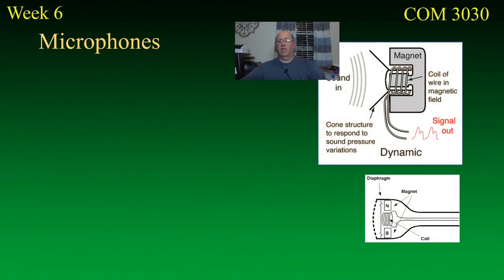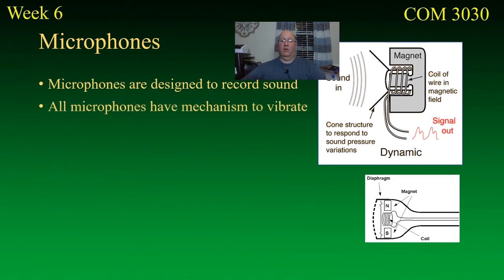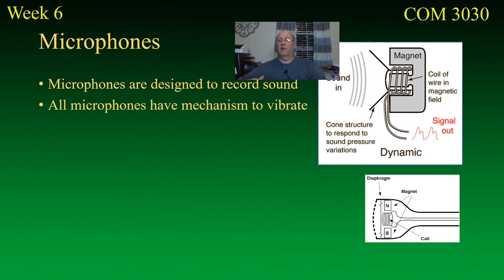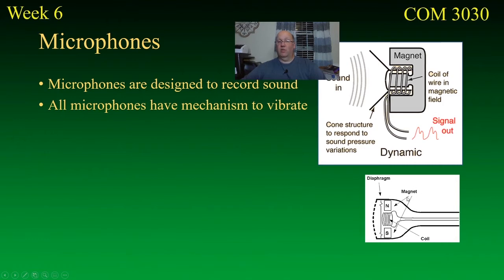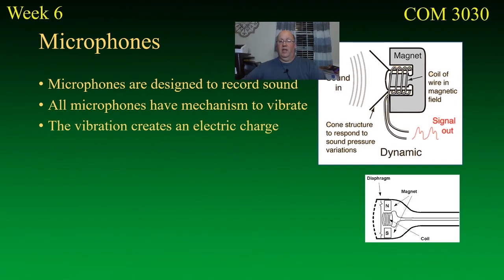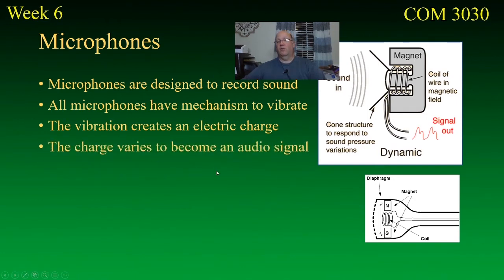Microphones are machines that convert sound into audio signals, and they're designed to record sound. All microphones have a simple mechanism that vibrates. Looking at the diagram, you can see a coil — sound hits this cone-shaped device, the coil vibrates, and that creates a small electric current. Usually there are magnets involved that create a current. Essentially all microphones vibrate and convert mechanical energy into a sound signal, which is then recorded electronically. The vibration creates an electric charge, and the charge varies to create the audio signal.